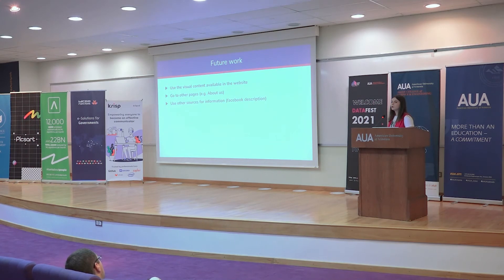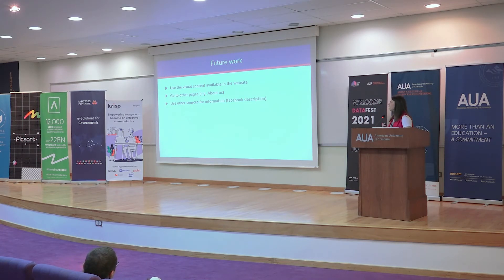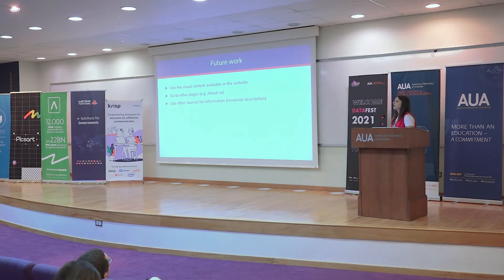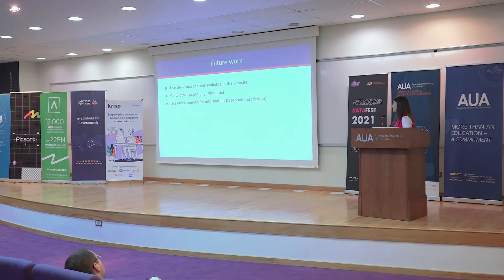What we thought about doing but didn't yet: first, to use the visual content from the website — we focus on textual content, but visual content can be important and we can combine it with text. Second, to go to other pages of the website — we are concentrated on the main page, but the 'About Us' page can be very informative. Third, to use other sources of information — for example, find the link to the company's Facebook page and get the description or category from there and combine that information too.